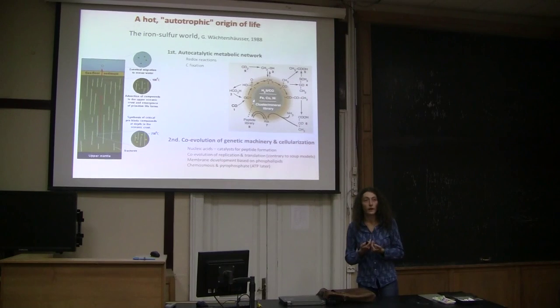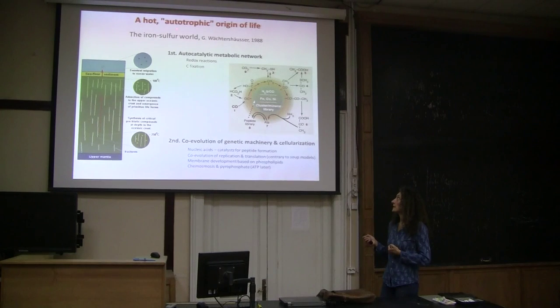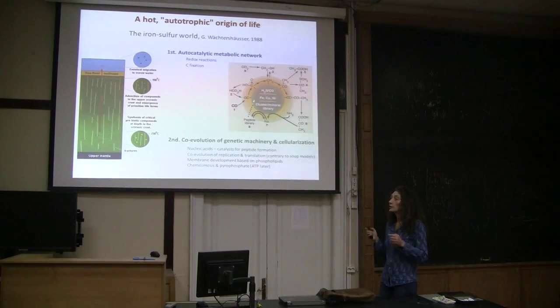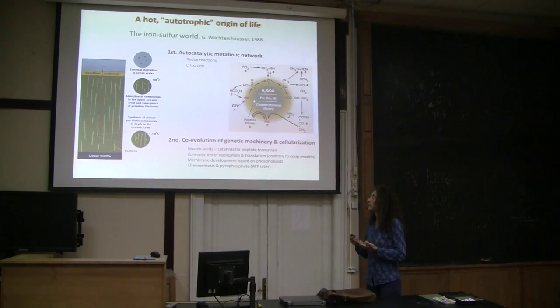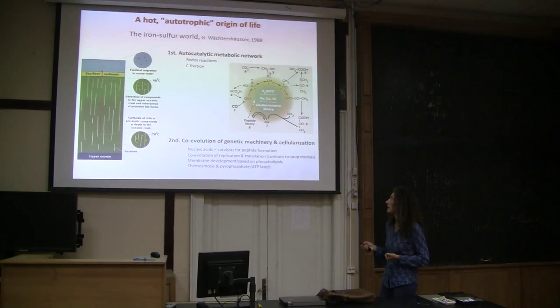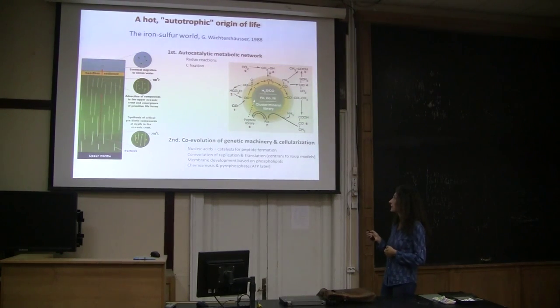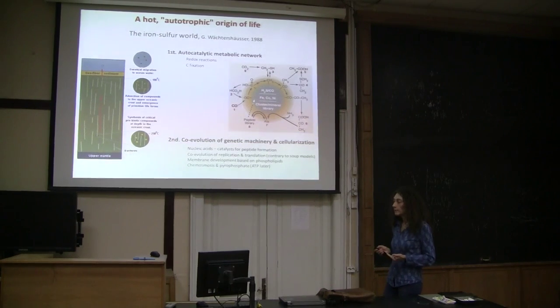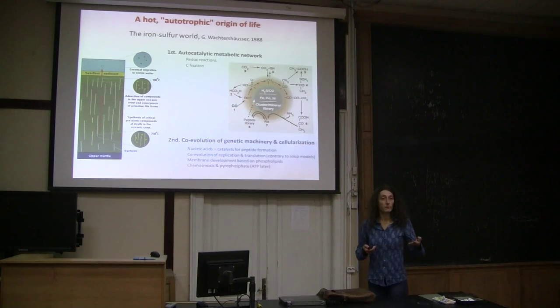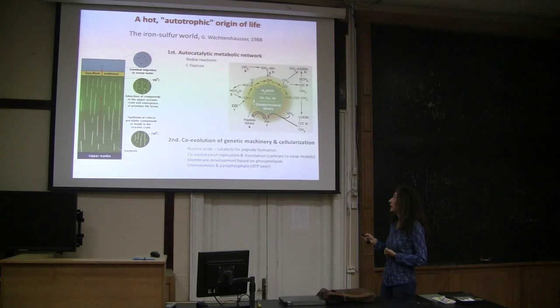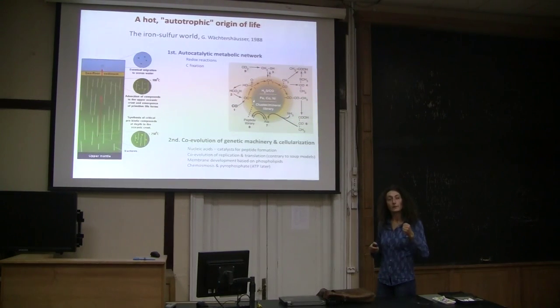The other kind of environments where people have proposed that life emerged are hot systems. And in particular, in this case, we have that only autotrophic models of the origin of life would be suitable for this kind of environment. One of such examples is the iron-sulfur world proposed by Günter Wächtershäuser in the 1980s. And here for him, the first living organism would be two-dimensional, would be formed just by an autocatalytic metabolic network on surface, on mineral surface, happening in the deep sea floor at very high temperatures. And here you would have reduction reactions conducive to carbon fixation.